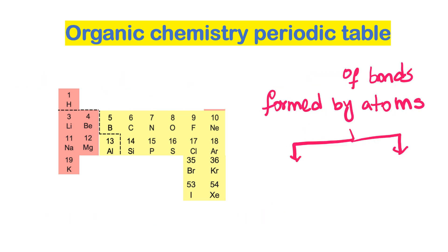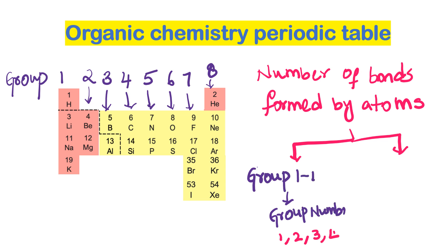To learn the number of bonds formed by the atom, we can divide this table into two parts: groups 1 to 4 and the second part would be group 5 to 8.